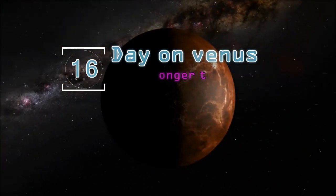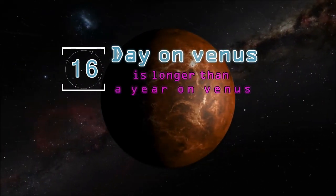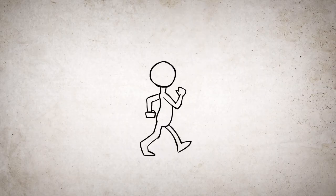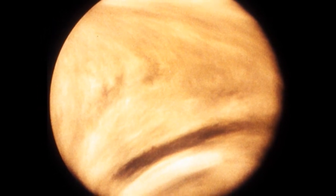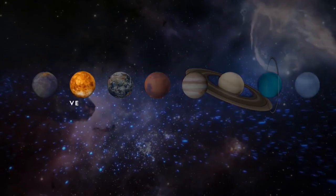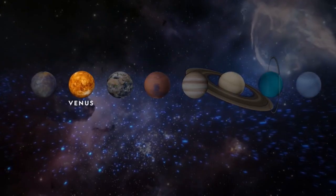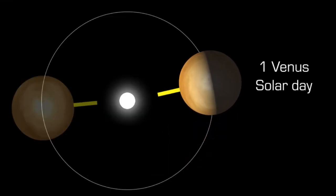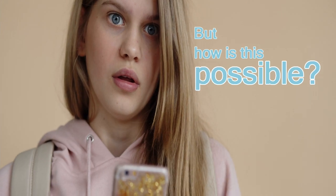A day on Venus is longer than a year on Venus. No matter how slow you walk, you'll probably never go slower than Venus, the slowest spinning space element in the universe. Incredibly, in Venus, days are longer than years. But how is this possible?